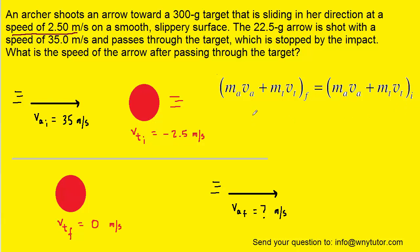So at this point, we could either plug in the known values or we could isolate the final velocity of the arrow and then plug in the known values. In this case, we'll plug in the known values and then solve for the final velocity of the arrow.